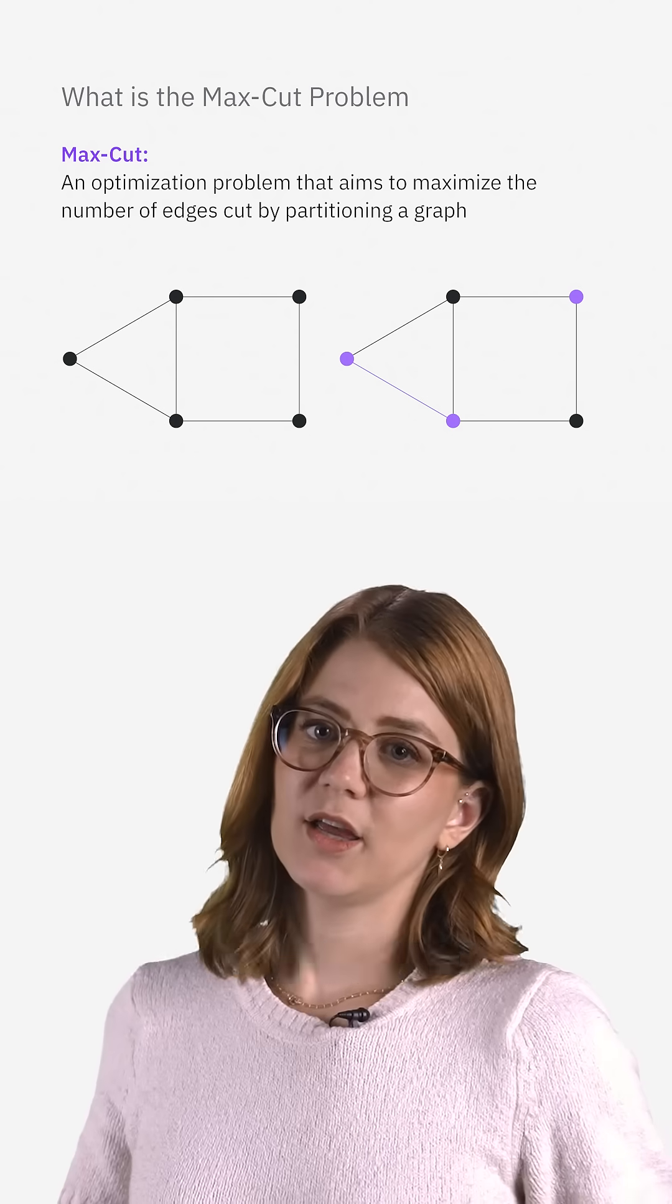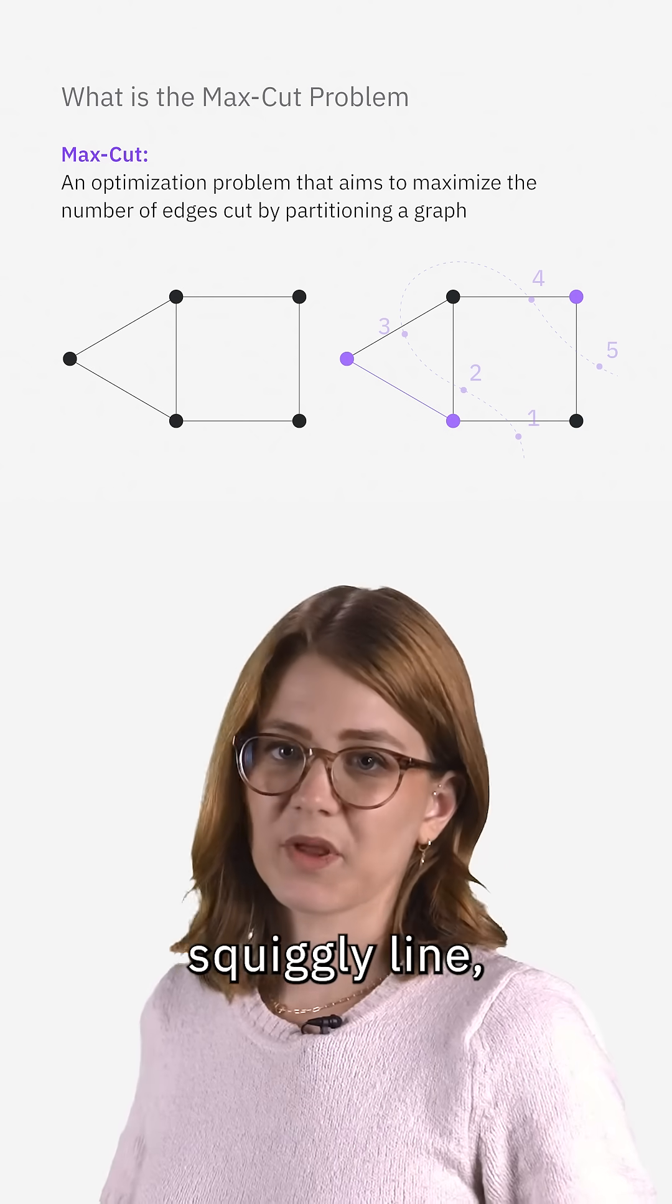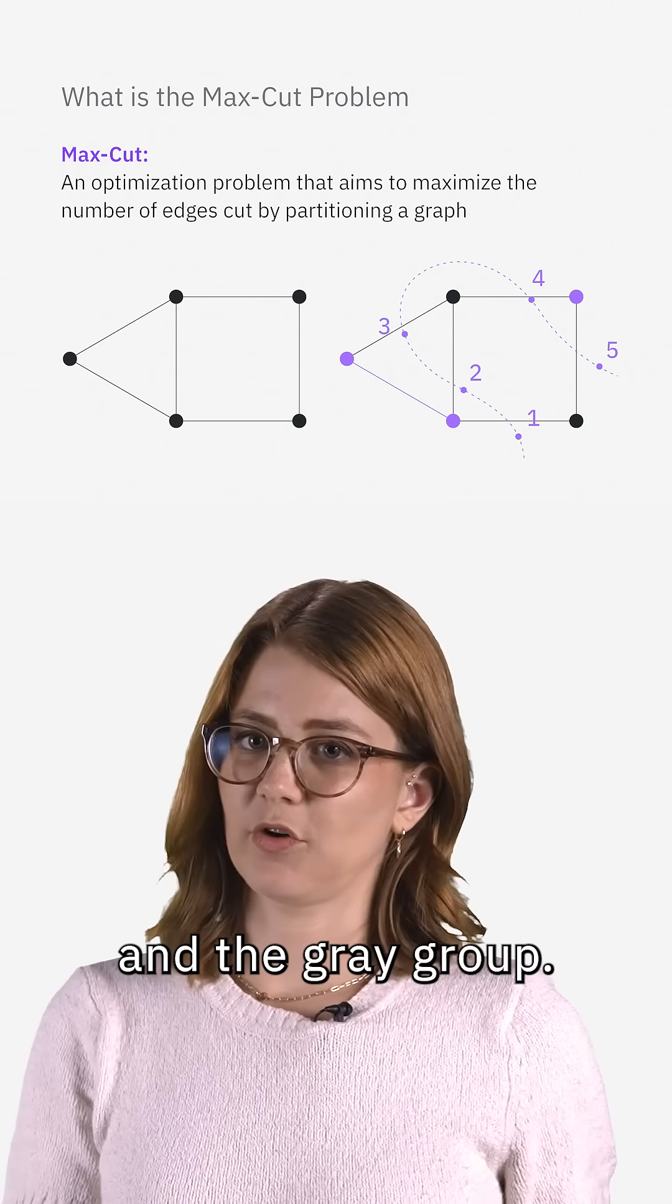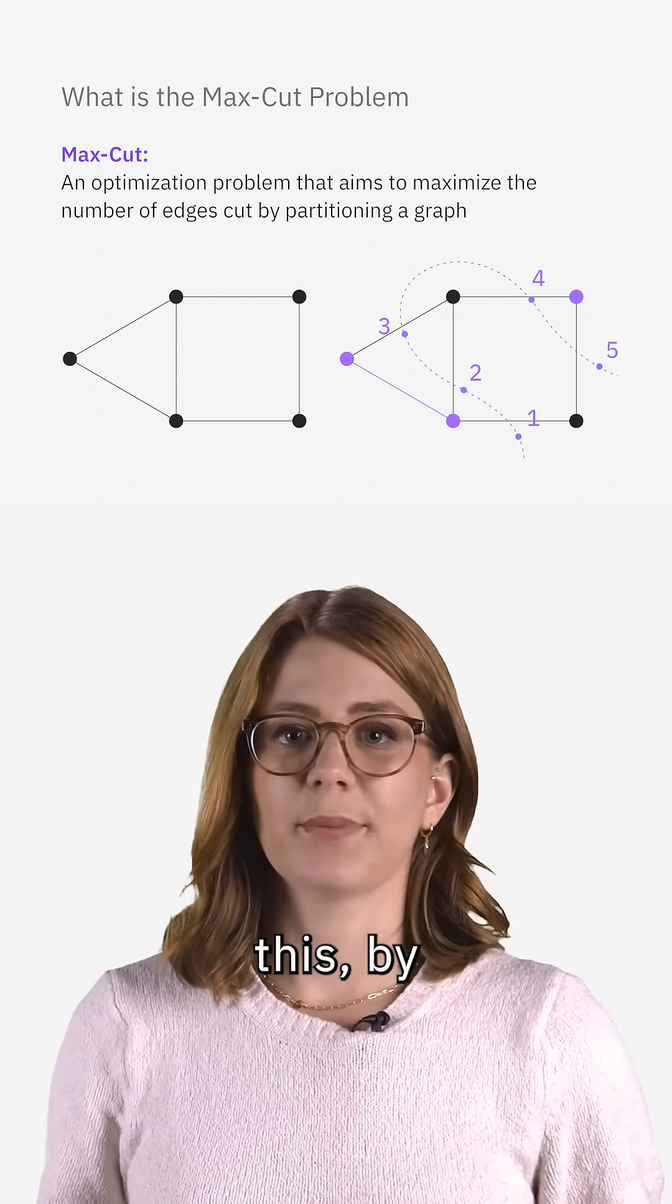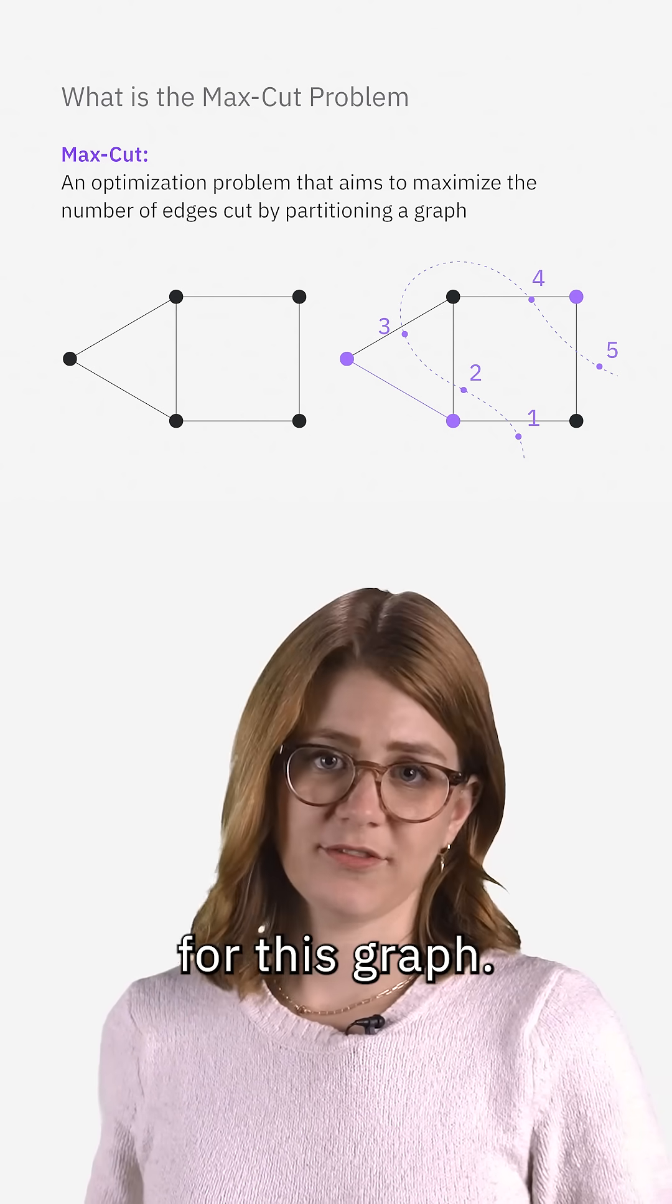So for instance, in this graph here, each node is connected like so, and the max cut is shown by this squiggly line, which divides the nodes into the purple group and the gray group. The way to do this by crossing the largest number of edges possible is to cut through five edges for this graph.